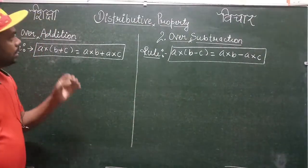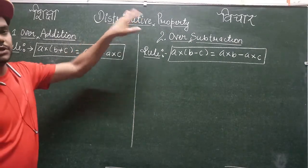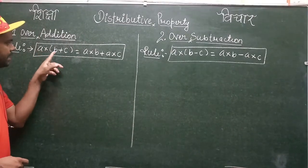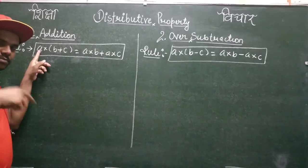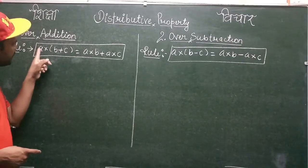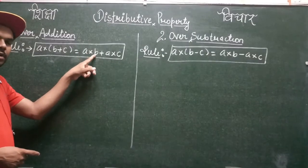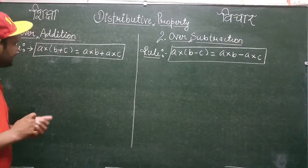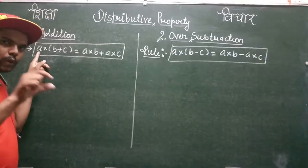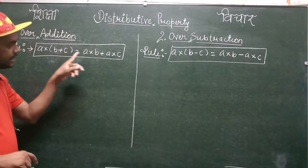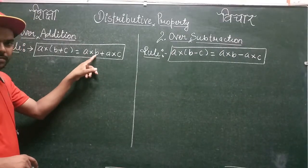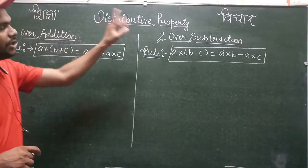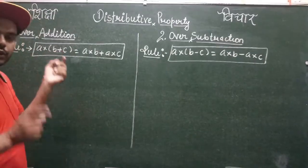This property is followed by each and every number. Now, why is this property known as the distributive property? It is known as the distributive property because when we multiply a by the sum (b + c), this multiplication distributes over b and c. That is, a is multiplied by b, then plus, and then a is multiplied by c. We see that a is distributed over the two numbers b and c, giving us a×b plus a×c. Since the case here is addition, we call it the distributive property over addition.